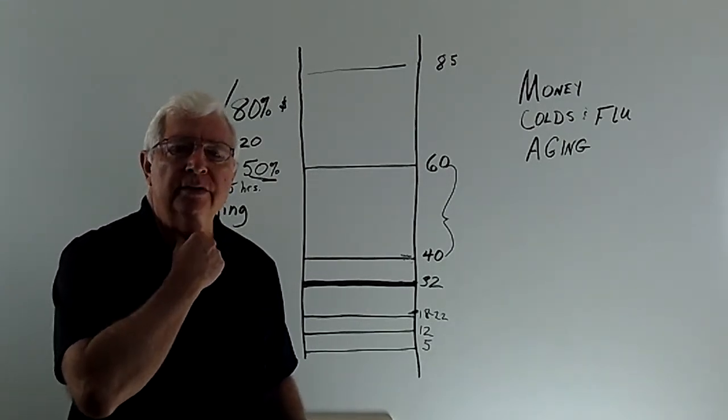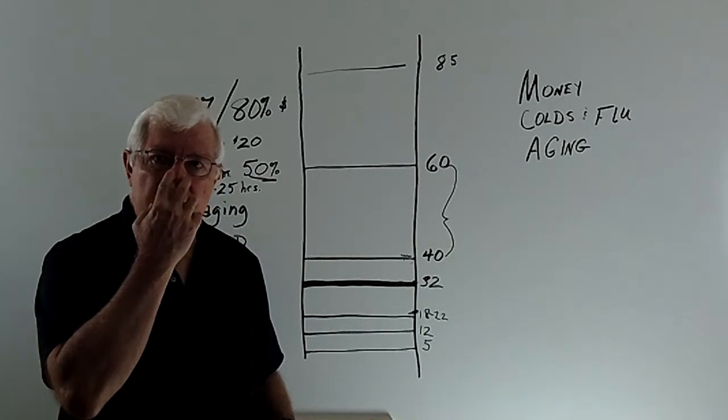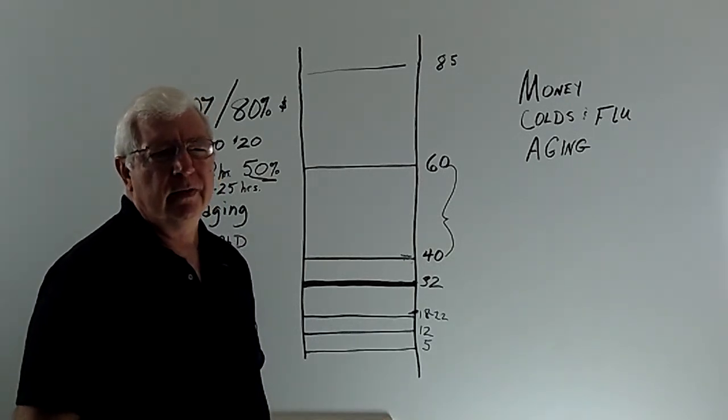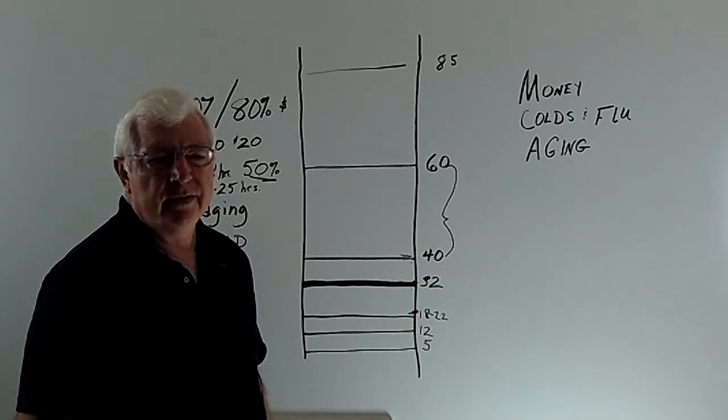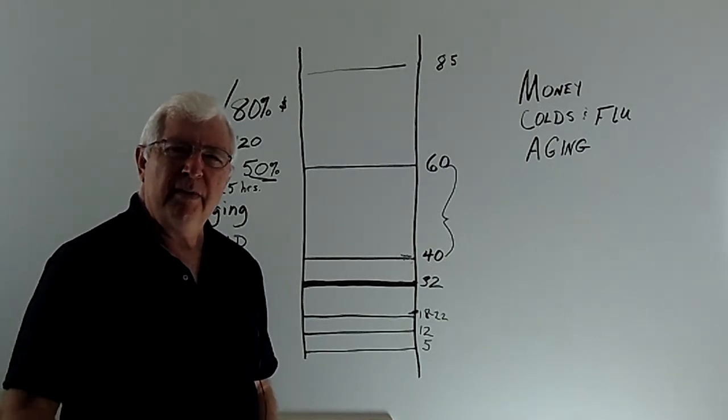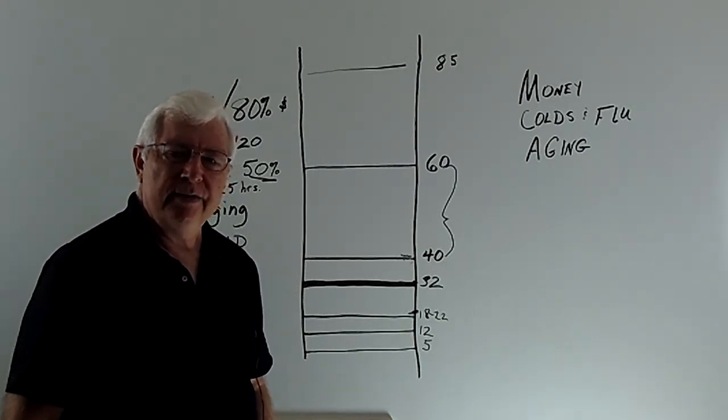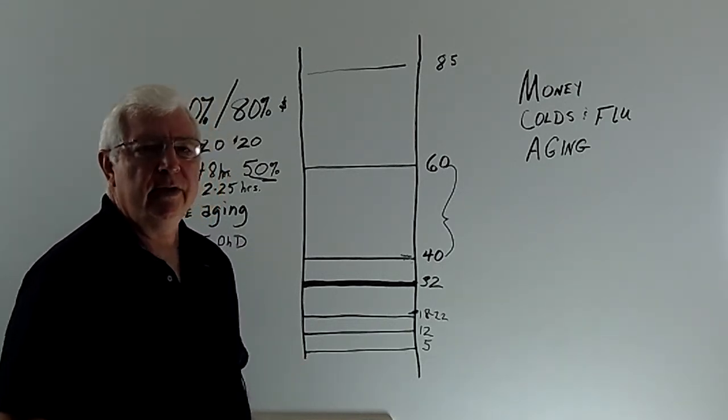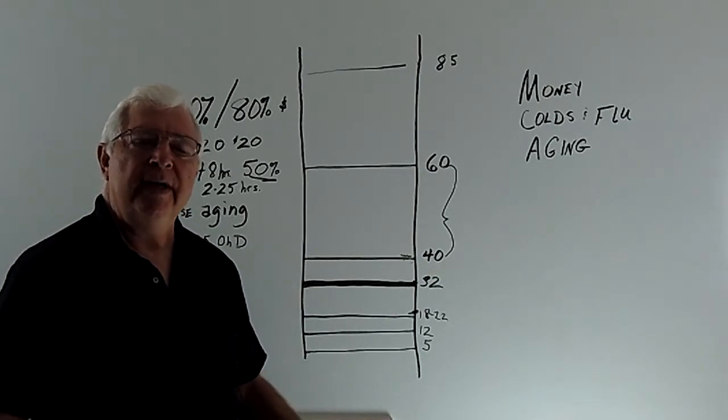She was complaining of a sore throat and sinus congestion. She took equivalent to about four, maybe five grams of ascorbate and probably 15,000 IUs of vitamin D3. About two hours later when she got home she called back and it was all gone.